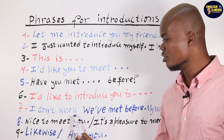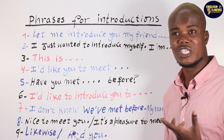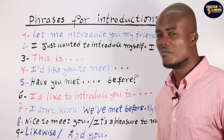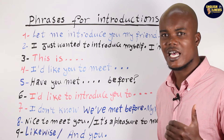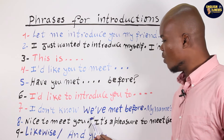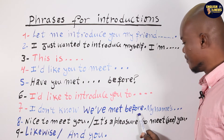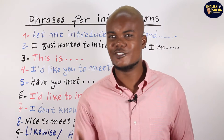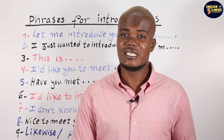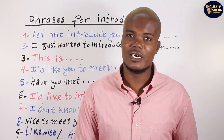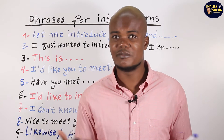'I don't know if we've met before, my name is...' — or 'I don't believe we've met before.' When speaking, you say 'I don't know.' It's important to greet the person first, then state your name. So: 'Hello, I don't know if we've met before. My name is Daniel.' That means: 'I'm not sure if we've met before, my name is Daniel.'